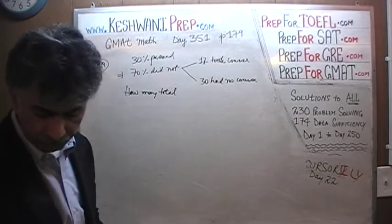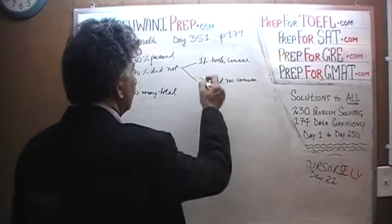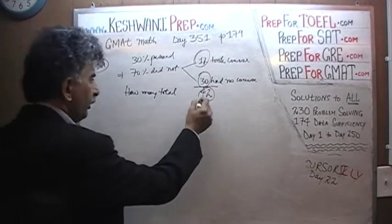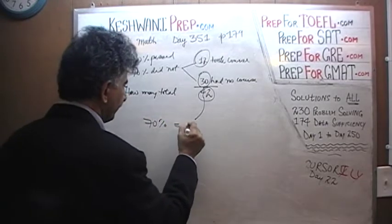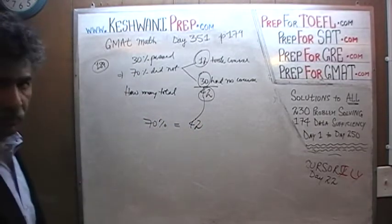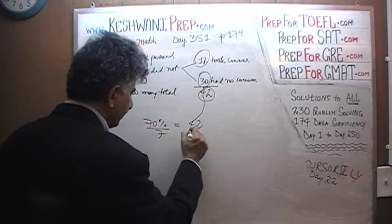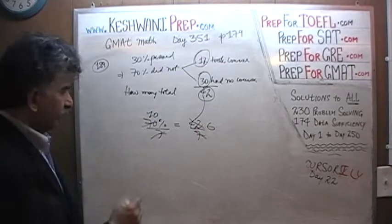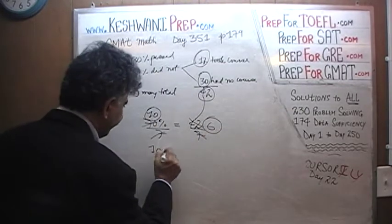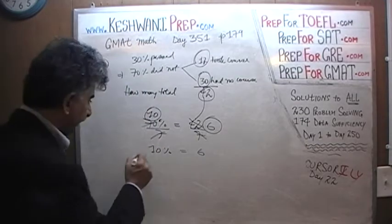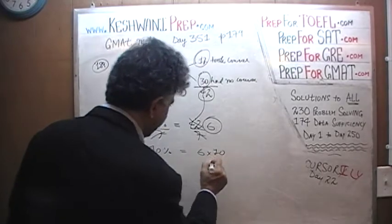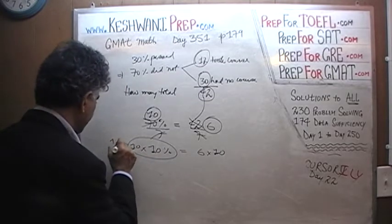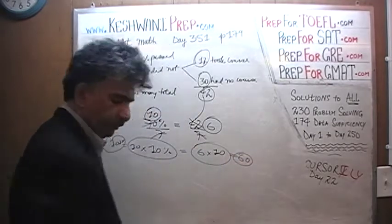The question simply is how many people are there in total. 12 had taken the course and 30 had not taken the course — that makes a grand total of 42, and that 42 must represent 70%. So 70% equals 42. If you divide both sides by 7, 10% is going to be 6. If 10% is 6, then multiplying both sides by 10, 100% equals 60. So there are 60 members in total.